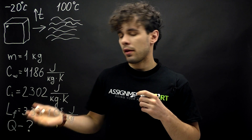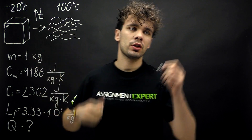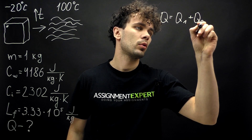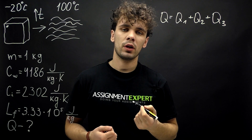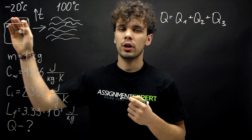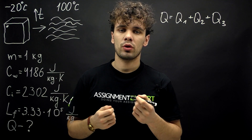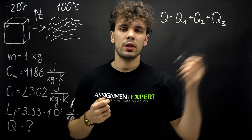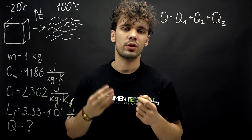The amount of heat needed to transform the ice cube to water with these temperatures consists of three amounts of heat: Q1, Q2, and Q3. Q1 is the amount of heat needed to change the temperature of the ice cube from negative 20 to zero degrees Celsius. Q2 is the amount of heat needed to transform ice into water at zero degrees Celsius, and Q3 is the amount of heat needed to change the temperature of water from zero to 100 degrees Celsius.